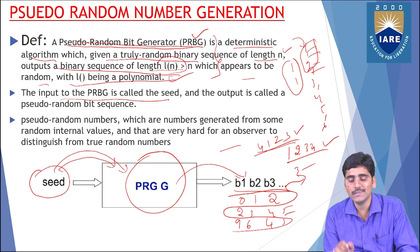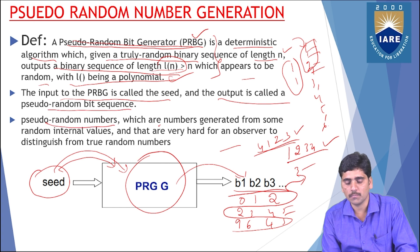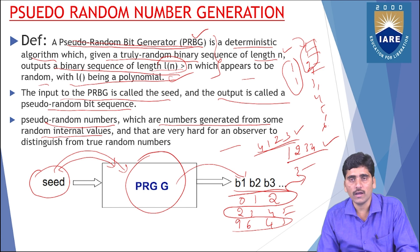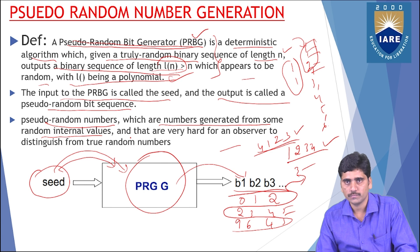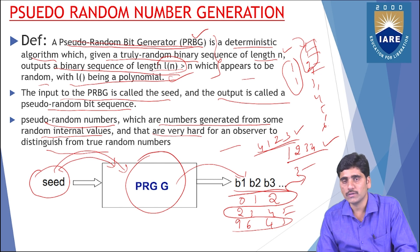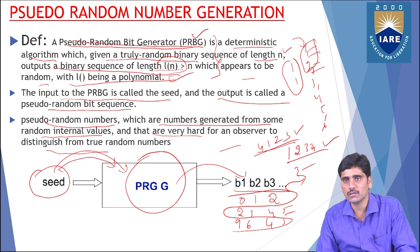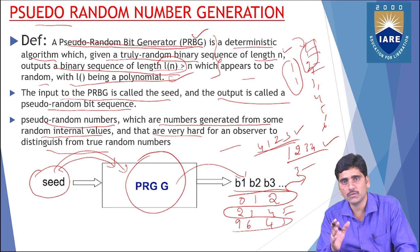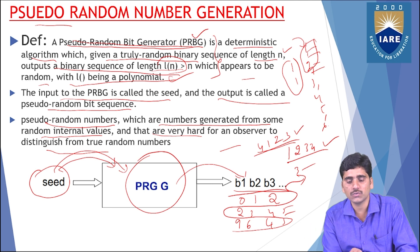The input to the PRBG is called a seed, and the output is called a pseudo-random bit sequence. The pseudo-random numbers are numbers generated from some random internal values — random processes, random variables, random values. It is very hard for an observer to distinguish these from truly random numbers. So it is very difficult to determine whether the numbers we are getting are truly random or not — they are pseudo-random numbers. Truly random numbers we cannot predict to the next generation of the sequence.